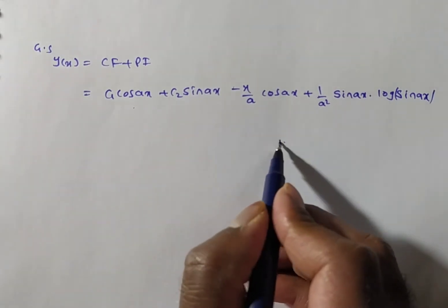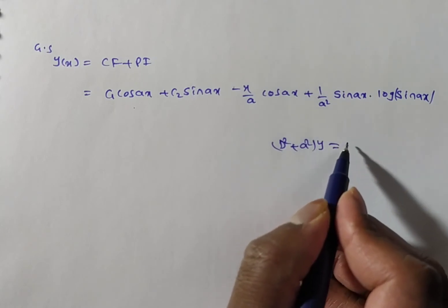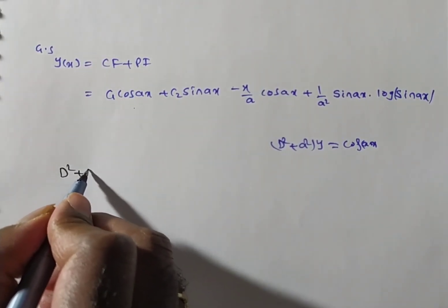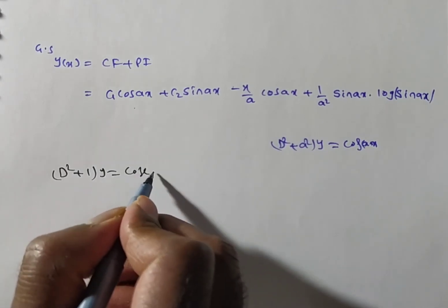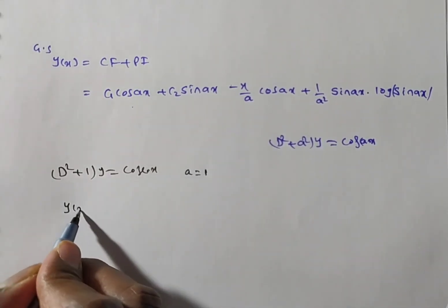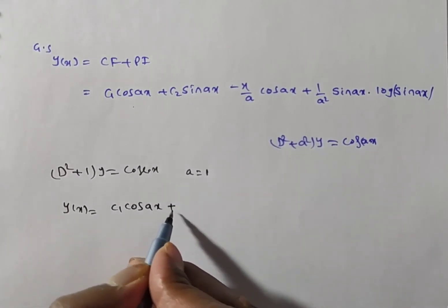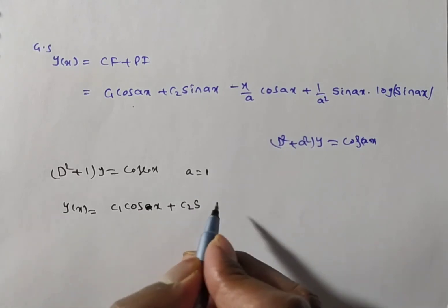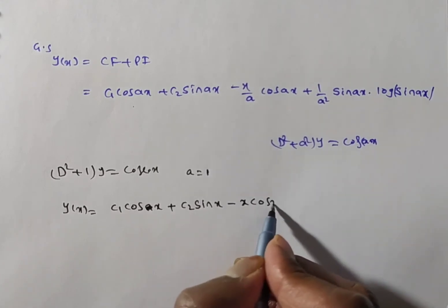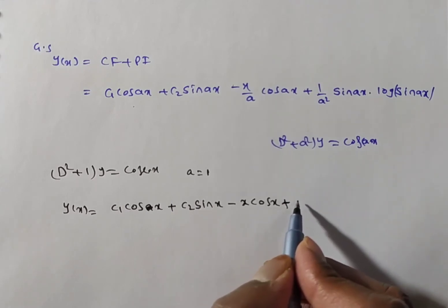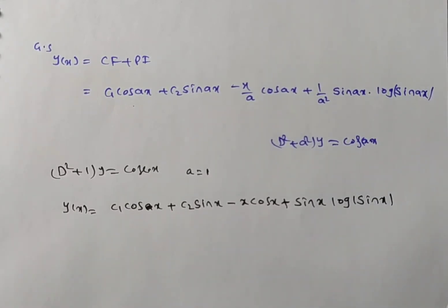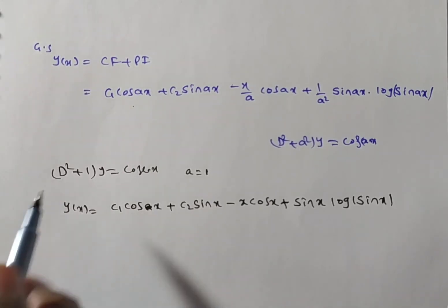For the second problem, (D² + 1)y = cosec(x), substitute a = 1 in the general solution. Then y(x) = c1·cos(x) + c2·sin(x) − x·cos(x) + sin(x)·log|sin(x)|. This is the general solution for (D² + 1)y = cosec(x).